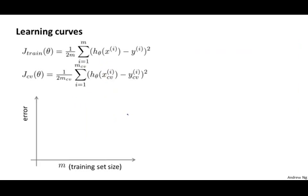Here's what a learning curve is. To plot a learning curve, what I usually do is plot J_train, which is the average squared error on my training set, or J_CV, which is the average squared error on my cross-validation set, and I'm going to plot that as a function of M, that is, as a function of the number of training examples I have.